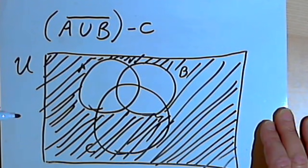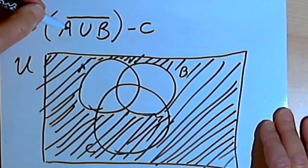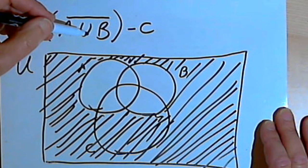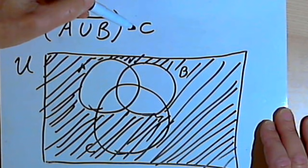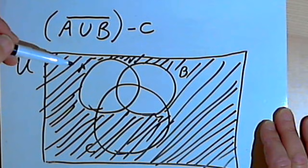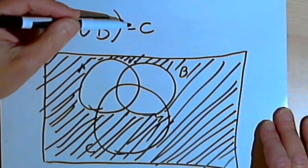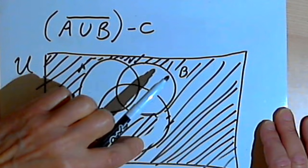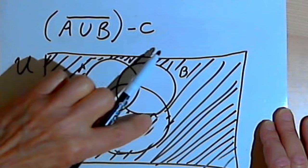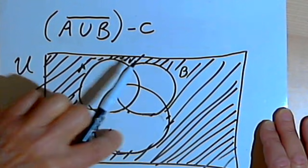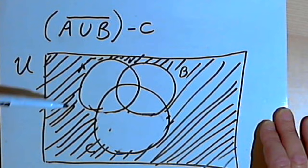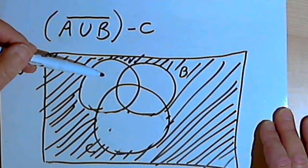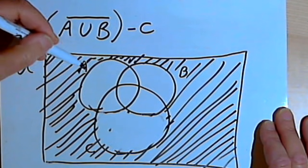So what I've got so far is the complement of A union B. And now from that I want to take away anything which is in C. So from the shaded area I'm going to take away what's in C, which basically means I can remove the shading from C. And now what I've got is just all of the area in the universal set which is not in A, not in B, and not in C — not in any of them.